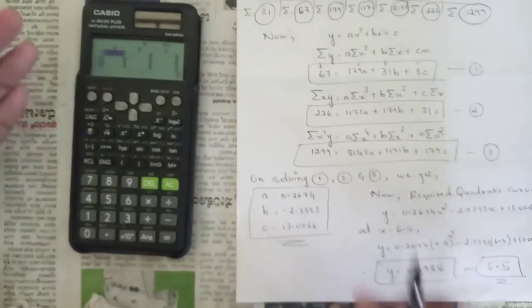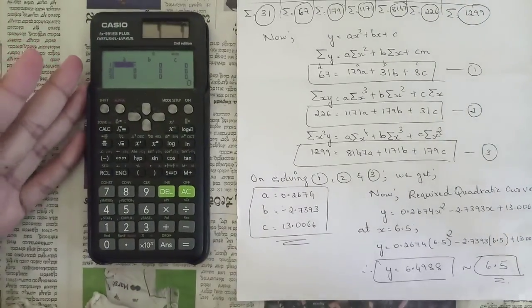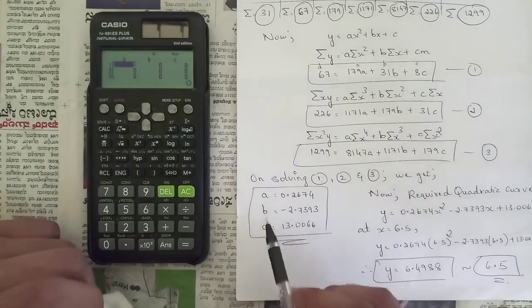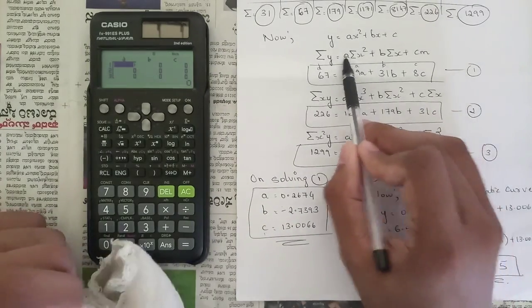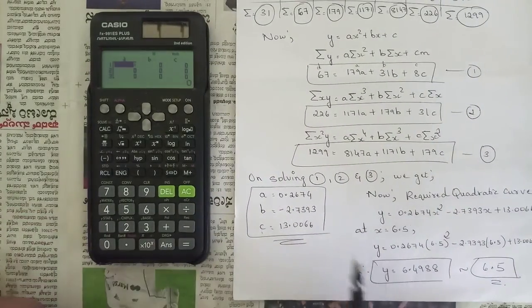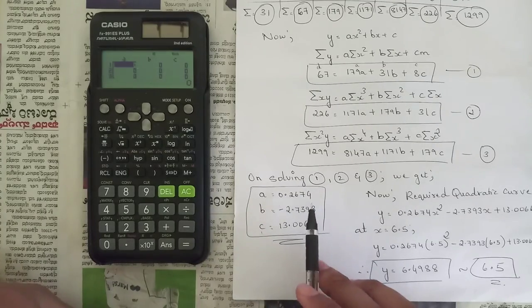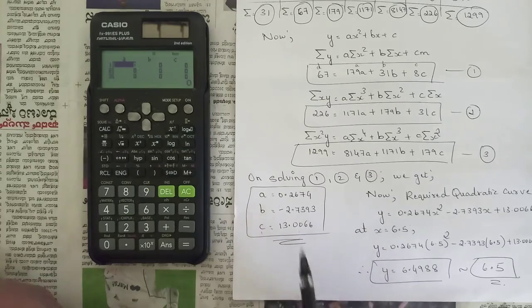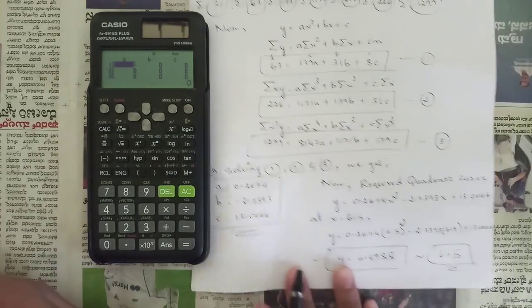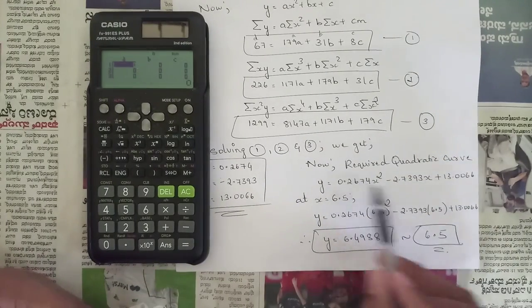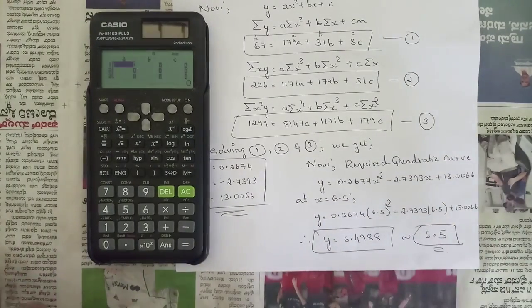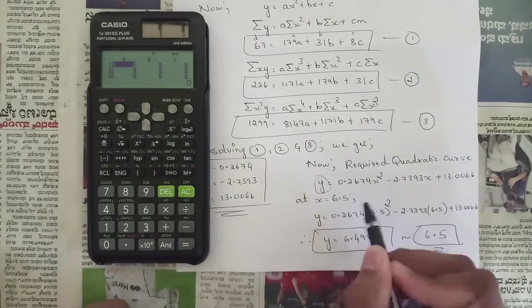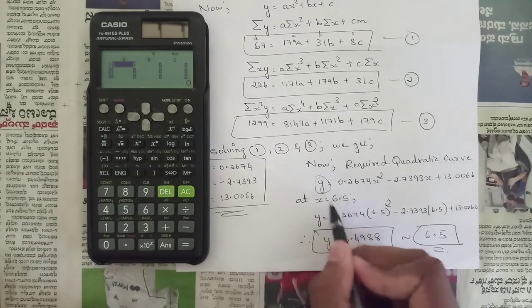The calculator will give values for x, y, z, but here we write them as a, b, and c since our parameters are a, b, c. We got the values: a = 0.2674, b = −2.7393, and c = 13.0066. Write the required quadratic curve and substitute these values for a, b, and c.